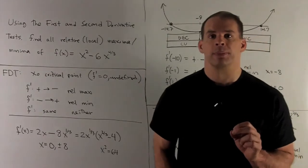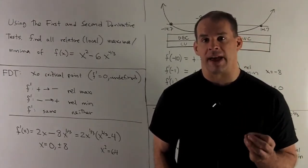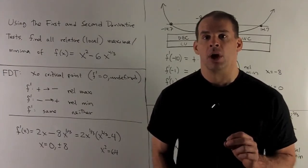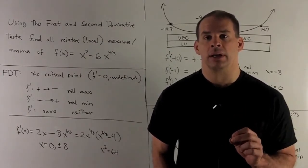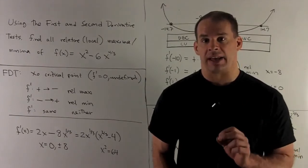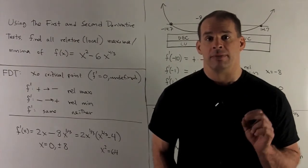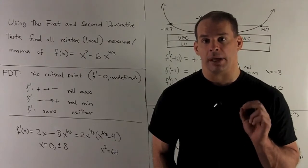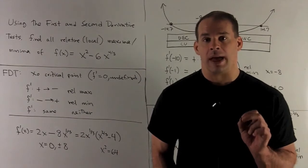First derivative test: Suppose x₀ is a critical point of f, that means the derivative of f is zero or undefined. We're going to check the behavior of the derivative on each side of x₀. If the sign on the derivative goes from positive to negative, x₀ will be a relative maximum. If it goes from negative to positive, x₀ will be a relative minimum. If the sign stays the same, then we'll have neither.